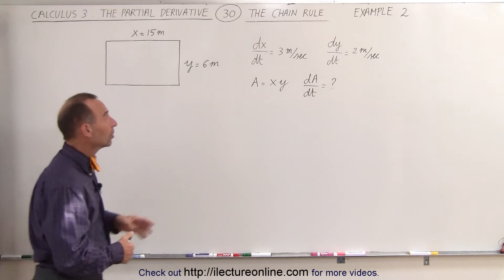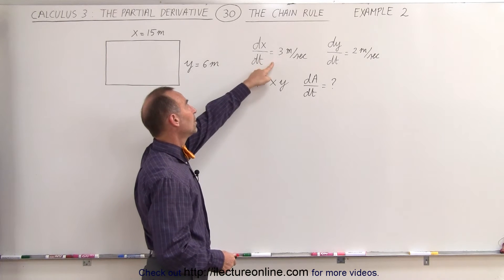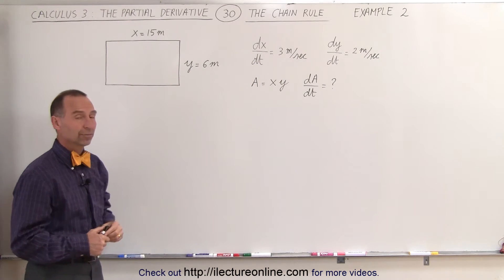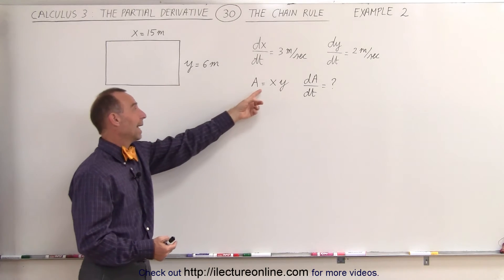Now they do change because you can see the rate of change of x is equal to 3 meters per second, and the rate of change of y is equal to 2 meters per second. Of course, the area of the rectangle is x times y.